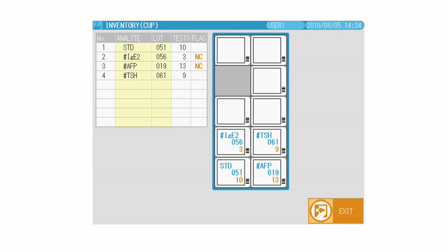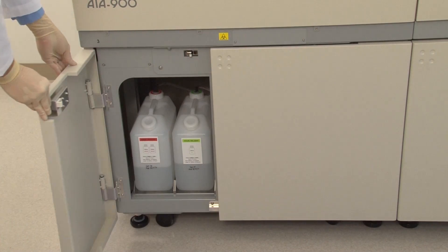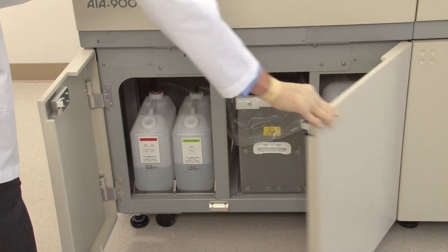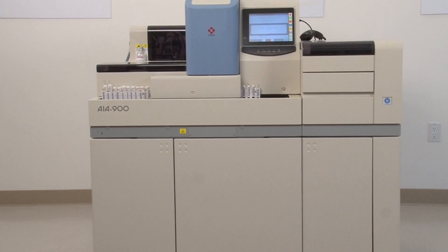reagent supply, consumable stock and waste volumes, which enable the operator to check at a glance which items need to be replenished or emptied. In just a few minutes, the system is ready to run samples.